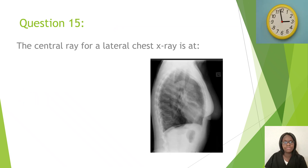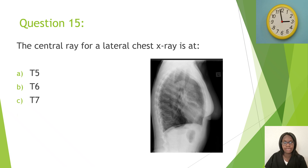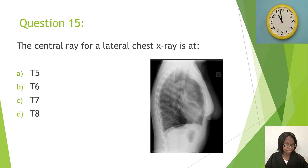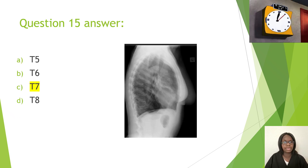Question fifteen: The central ray for a lateral chest x-ray is at — A, T5; B, T6; C, T7; D, T8. The correct answer is C, T7.